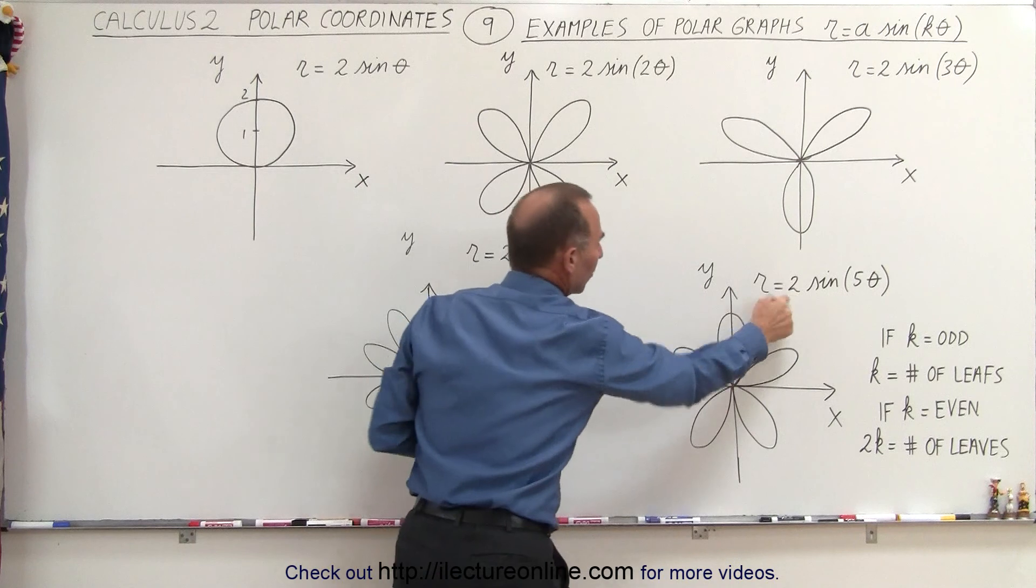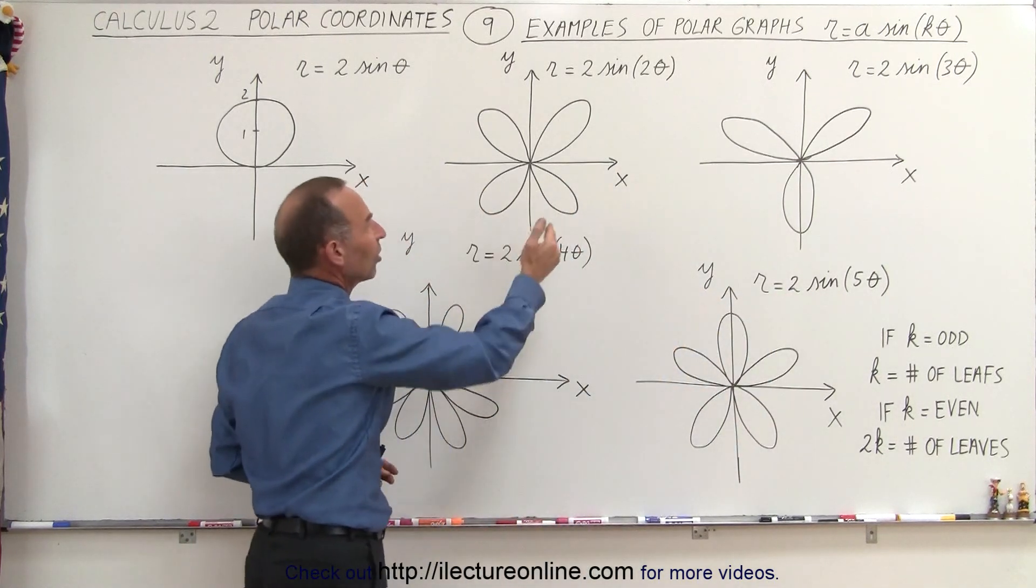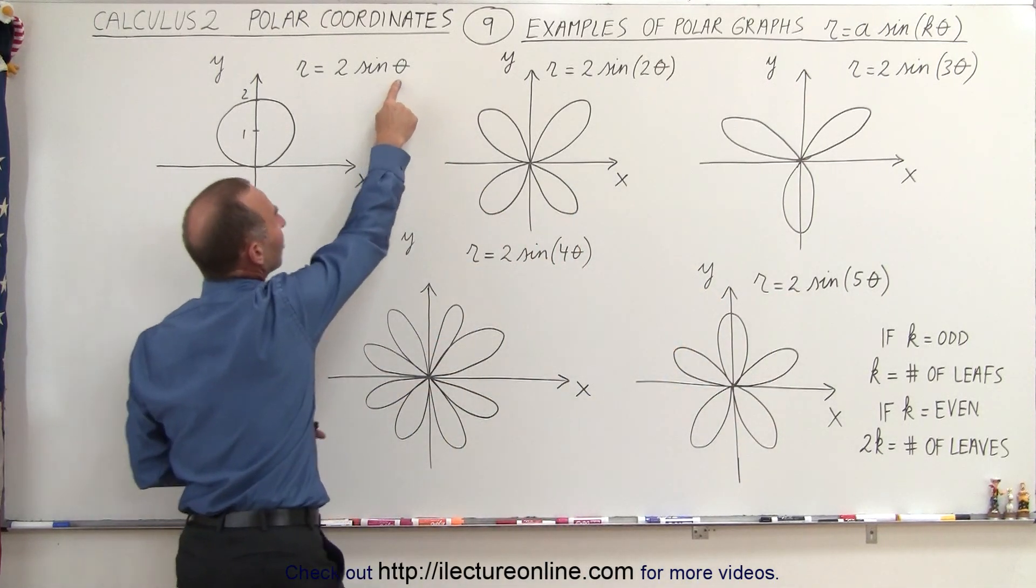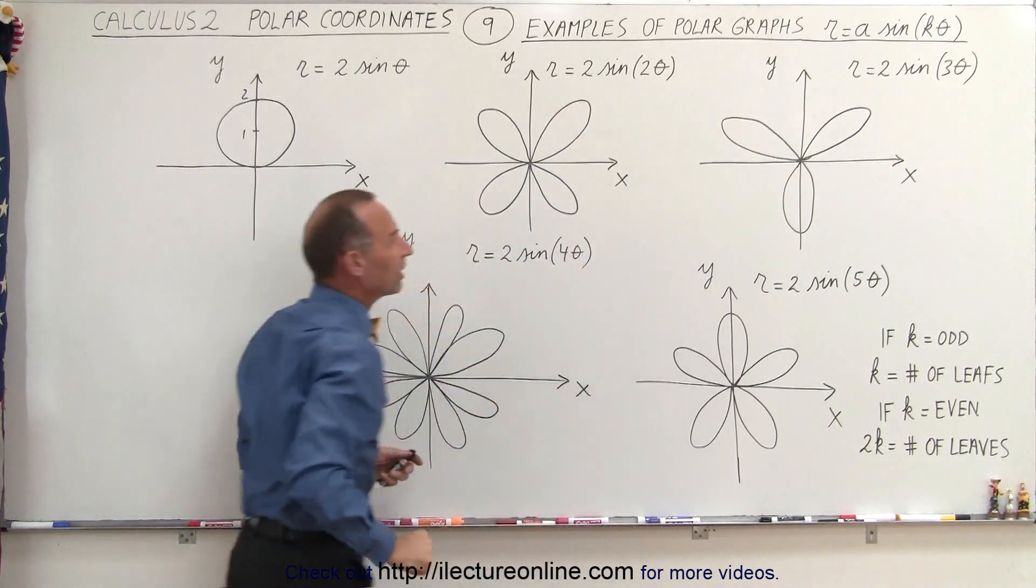So as you change this number, you just simply make the leaves longer. But the position of leaves depends upon the angle itself and the constant in front of the angle.